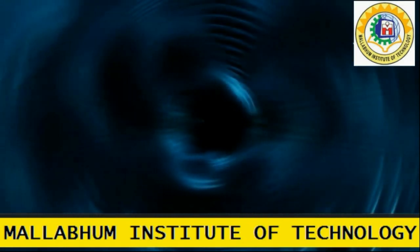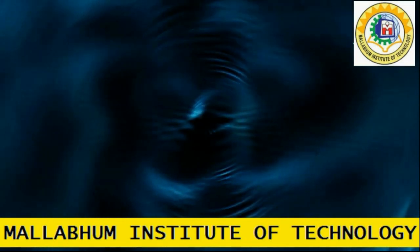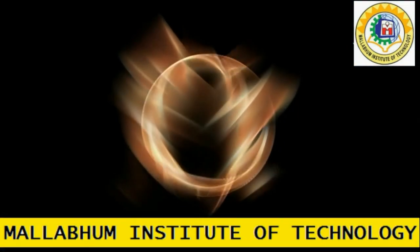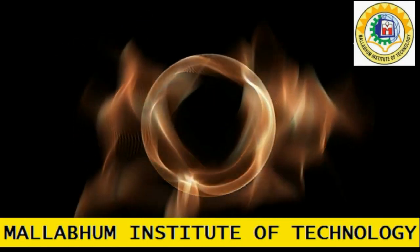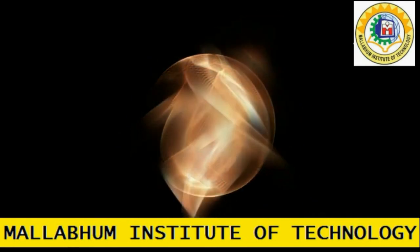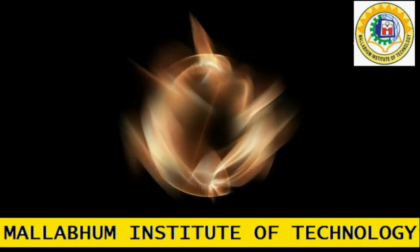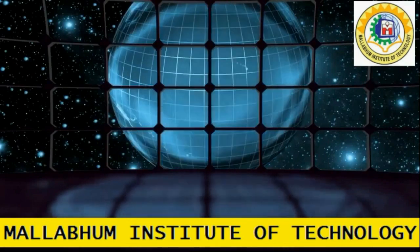Scientists keep on doing the experiment again and again by changing the observer machine. And also they ensure that the machine doesn't emit any kind of electric or electromagnetic field. But every time, the electron shows the same thing again and again.